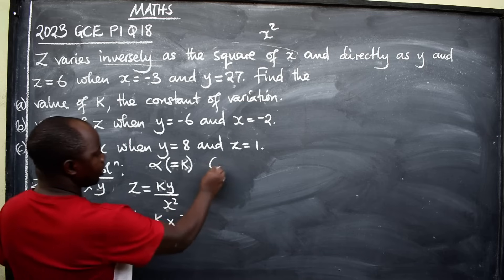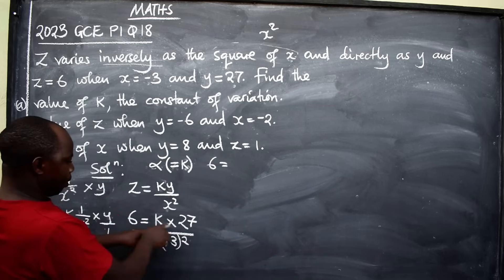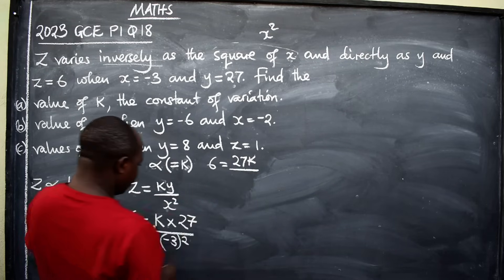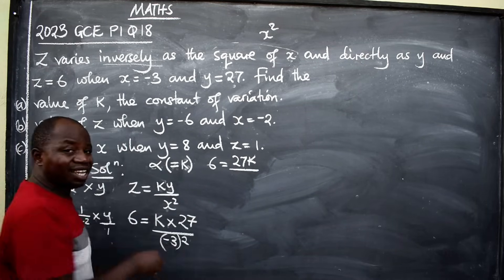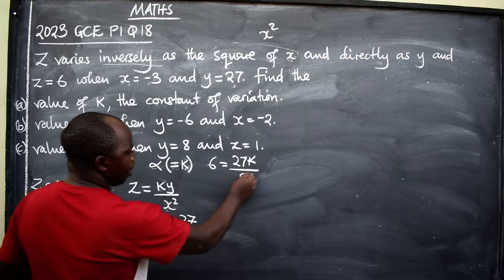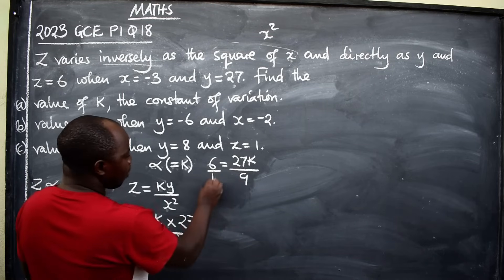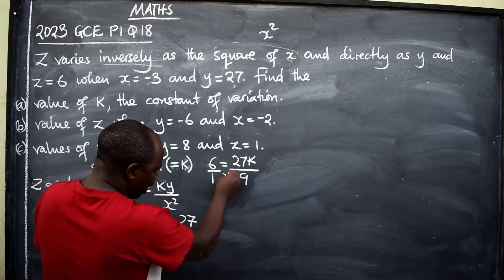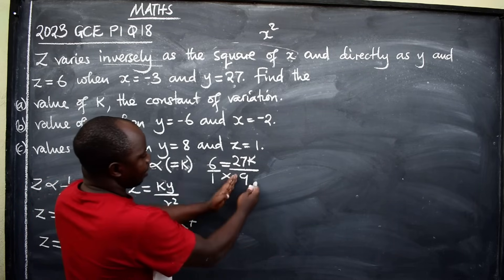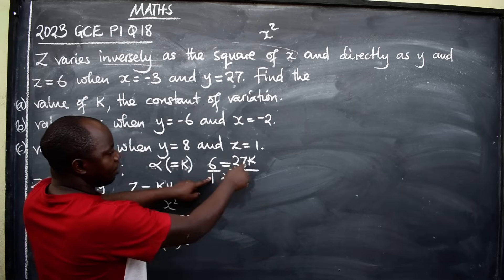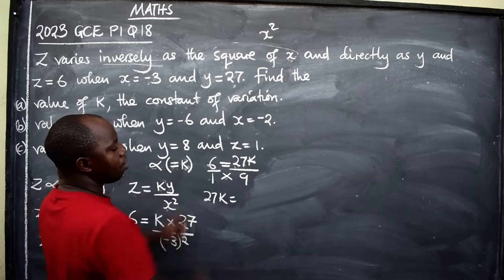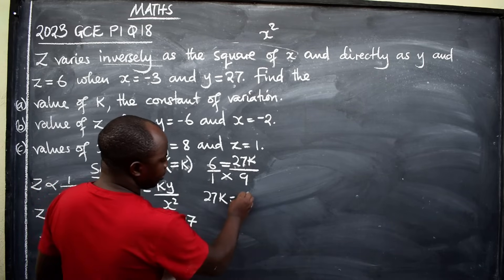This one now is going to allow us to find the value of k. Further, I'll say 6 equals k times 27 is 27k over negative 3 squared. That is negative 3 times negative 3, I'm going to get 9. Here, I'm going to get 9. Over 1, cross multiply at this point. When you have equal sign here, a fraction here, a fraction here, cross multiply. 1 times 27k, it is 27k, because 6 times 9 is 54.